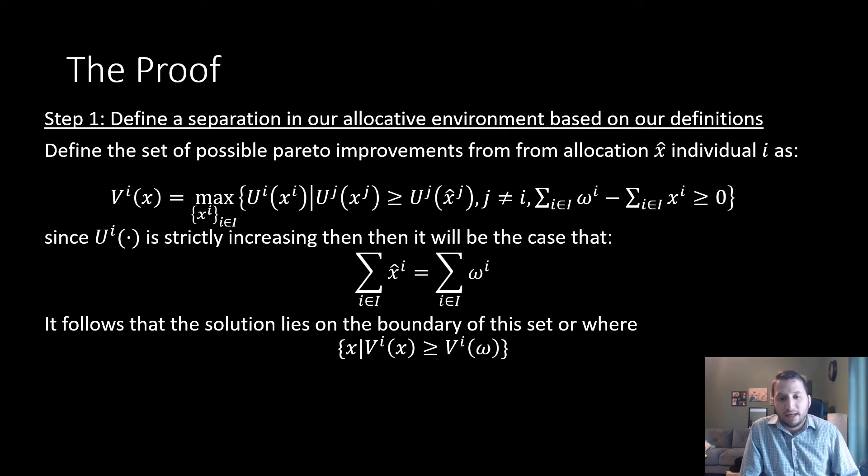Since U^i is strictly increasing, then it will be the case that the sum of this allocation x̂ is going to be equal to the sum of endowments. It follows that the solution lies on the boundary of the set where x is such that V^i(x), which is this value function evaluated at bundle x, is going to be greater than this value function evaluated at this endowment.